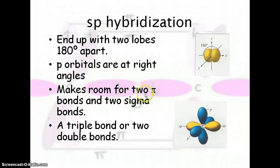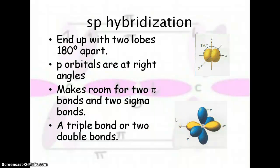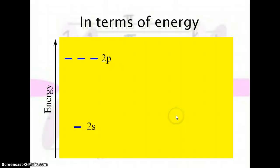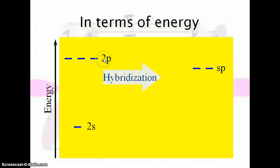This makes more room for the pi bonds and sigma bonds. We see sp hybridization when talking about triple bonds or when you have two double bonds. In terms of energy, sp is lower in energy than the 2s and the 2p, making it the most favorable hybridization for bonding.